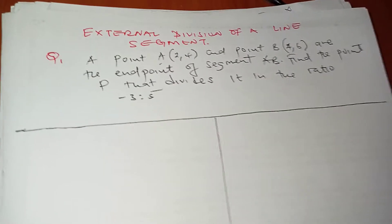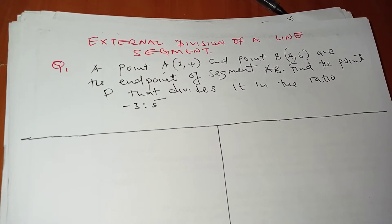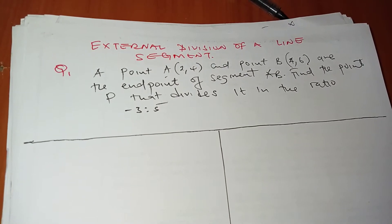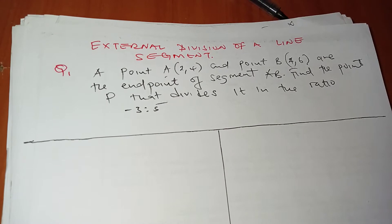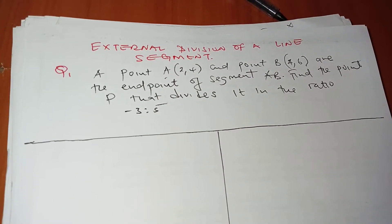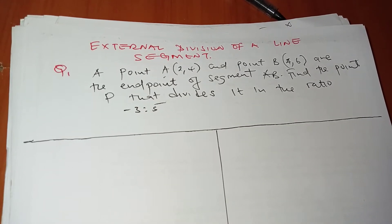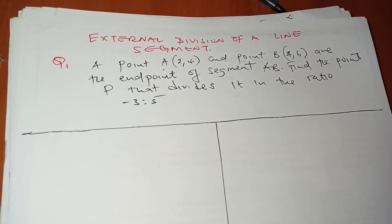Welcome to this video on external division of a line segment. The question reads: A point A(2,4) and point B(4,6) are the endpoints of segment AB. Find the point P that divides it in the ratio of -3:5.